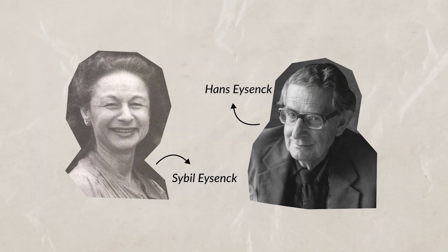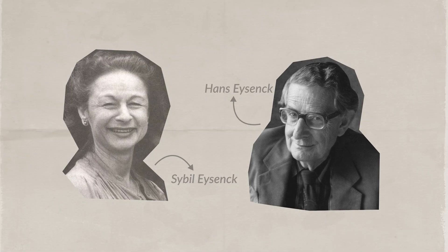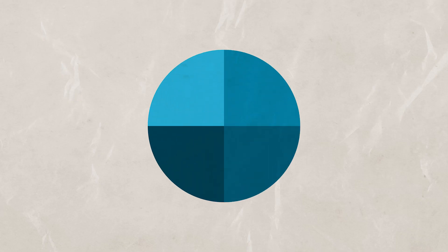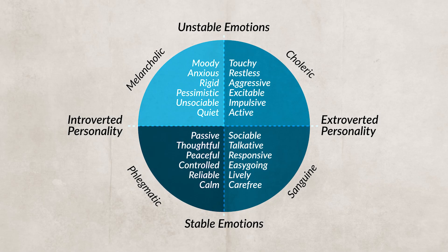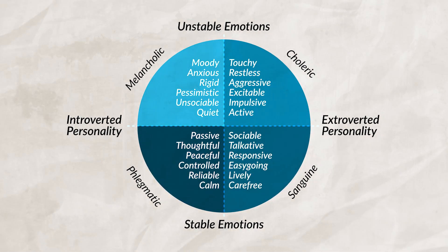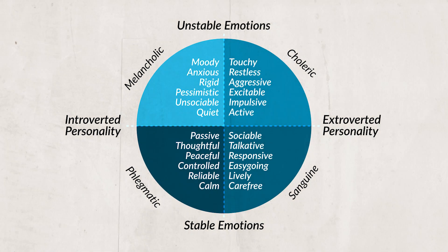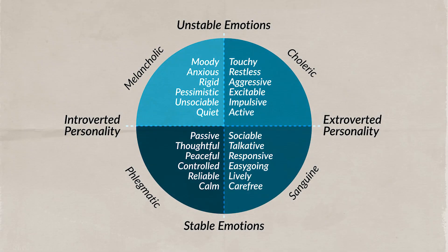Other individuals such as Hans Eysenck and Sibyl Eysenck believed that we could look at individual personality in two ways: extroversion versus introversion and emotional stability versus instability. By having individuals take questionnaires, researchers could analyze their answers and use factor analysis to identify clusters of test questions that connect with basic traits. Eysenck believed that it was an individual's biology that shaped why an individual had certain personality traits by giving them a predisposition towards those traits.